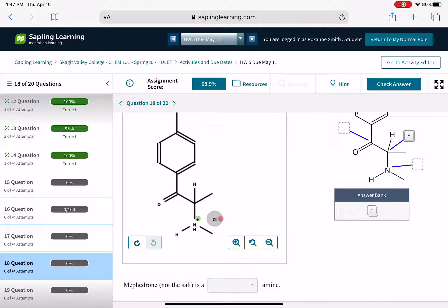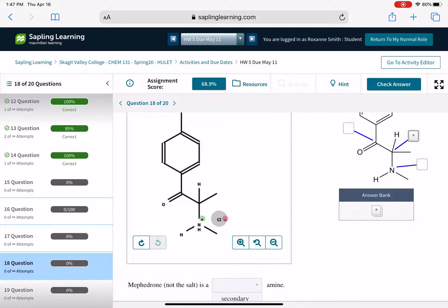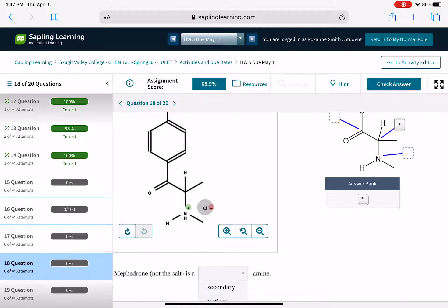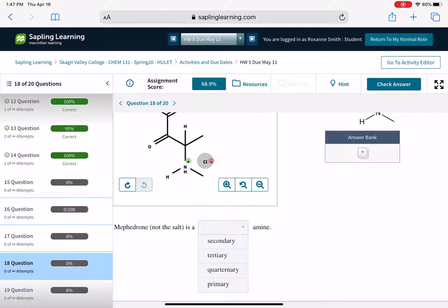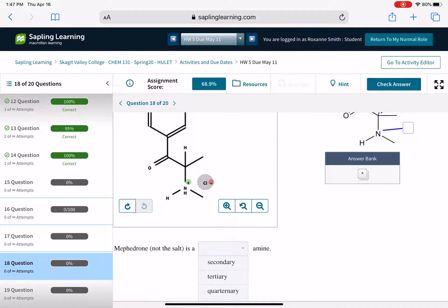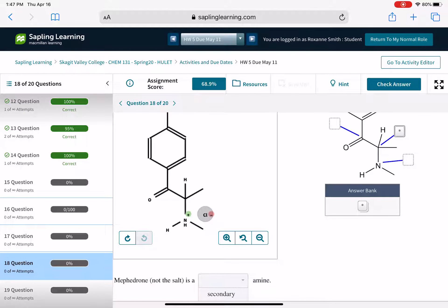And then there's one sneaky question down here at the bottom where it wants you to classify, not the structure that we drew, but the structure that was provided for us originally. Is it primary, secondary, or tertiary? Which you guys can totally do that.